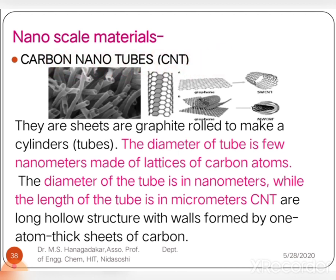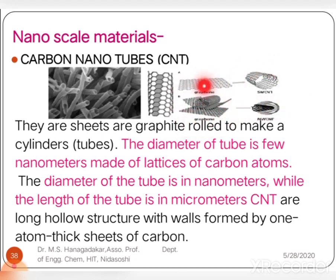The second nanoscale material is carbon nanotubes, abbreviated as CNT. Carbon nanotubes are graphite rolled to make cylindrical tubes. The diameter of the tube is a few nanometers, made up of lattices of carbon atoms. The diameter is in the nanoscale while the length of the tube is in the micrometer scale. It has a hollow structure with a wall one atom thick. When a single graphite sheet is rolled it forms a single-wall carbon nanotube; when many graphite sheets are rolled you get multi-walled carbon nanotubes.